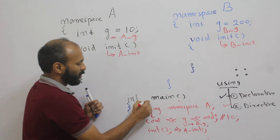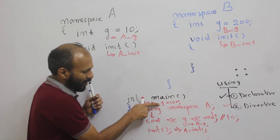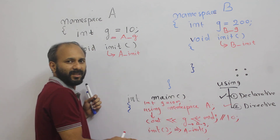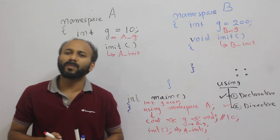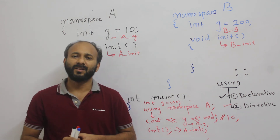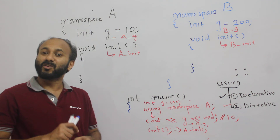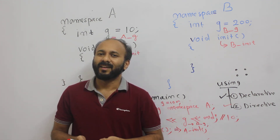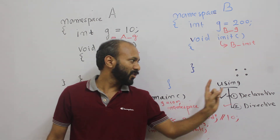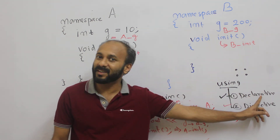In the directive method also, if you declare a local variable int g = 100, the compiler gets confused. Since local variables have higher privilege, the local variable will be printed. If you want to avoid all confusion you have to use the scope resolution operator, but with the scope resolution operator you have to use that complex syntax everywhere. The directive syntax is simpler but there are some chances for confusion. All methods are equally important — it depends on the scenario whether you use the scope resolution operator or the using keyword, either with the declarative method or the directive method.